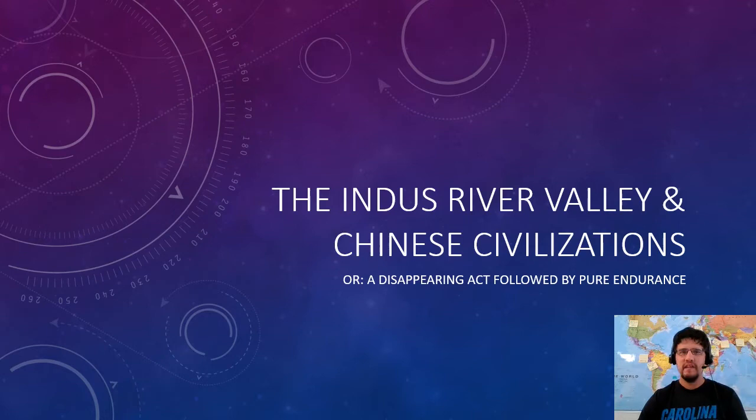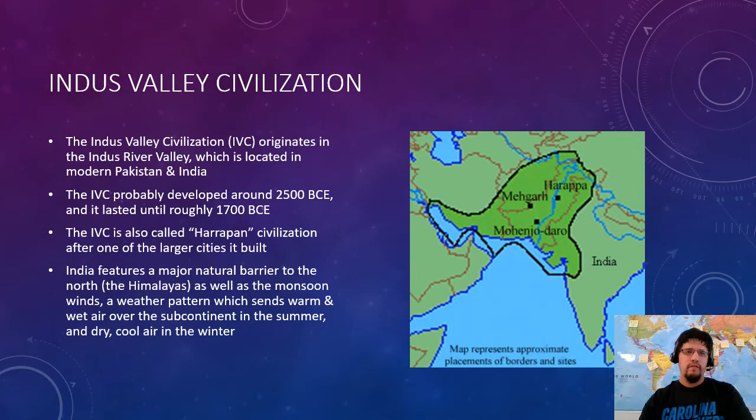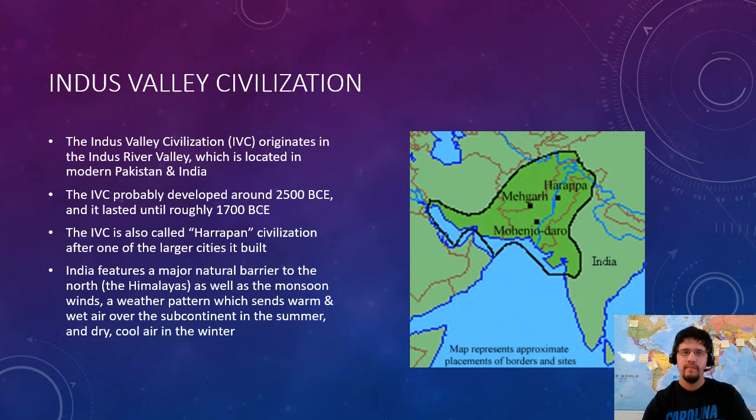So let's go ahead and get started with our last two river valley civilizations: the Indus River Valley and China. Just like Mesopotamia and Egypt, the Indus Valley civilization requires a river to function properly. The IVC is not at all shockingly based upon the Indus River, and it was located in modern Pakistan and India. You can see the Indus River Basin on this map here.